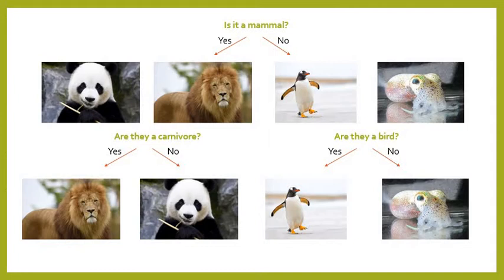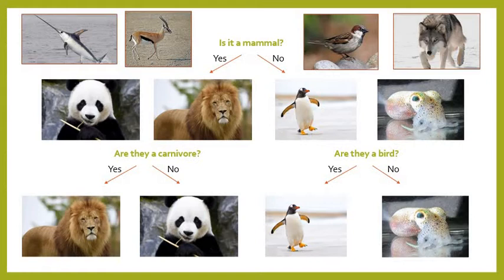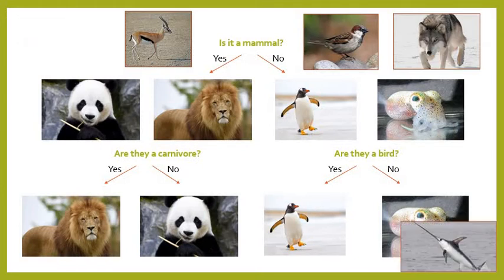We can test our system by looking at a few other animals. We've got a swordfish, a gazelle, a common sparrow, and a wolf. For the swordfish: is it a mammal? It lives in the sea and has cold blood, so no. Is it a bird? No. So the swordfish ends up in the same class as the squid, which tells us they may share some similar characteristics. Now pause the video and see if you can work out where the gazelle, the sparrow, and the wolf will end up.